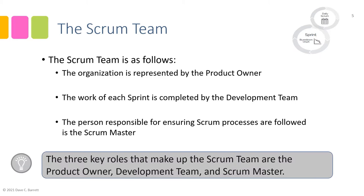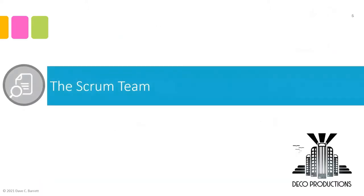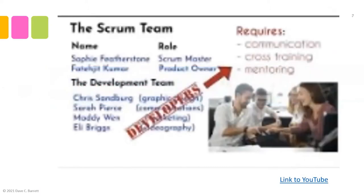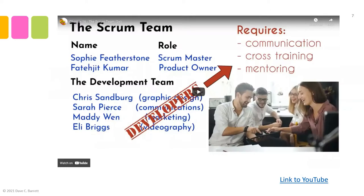Key idea: the three key roles that make up the scrum team are the product owner, the development team, and the scrum master. Let's take a look at the first video describing the scrum team.